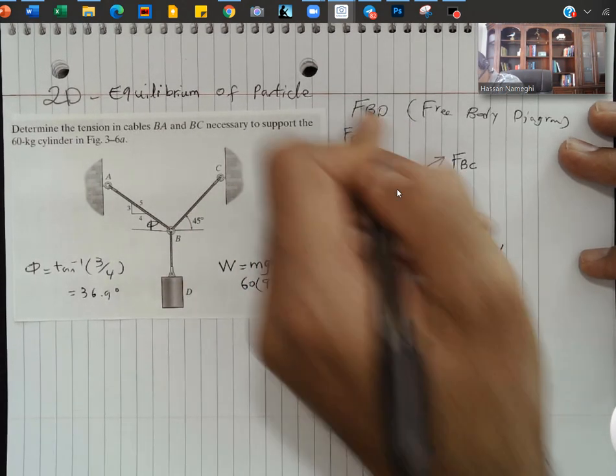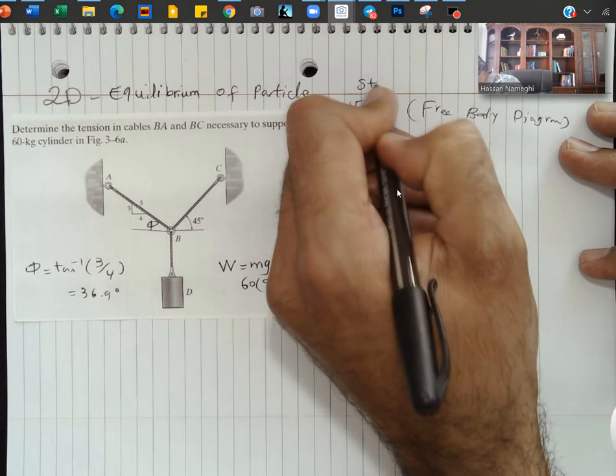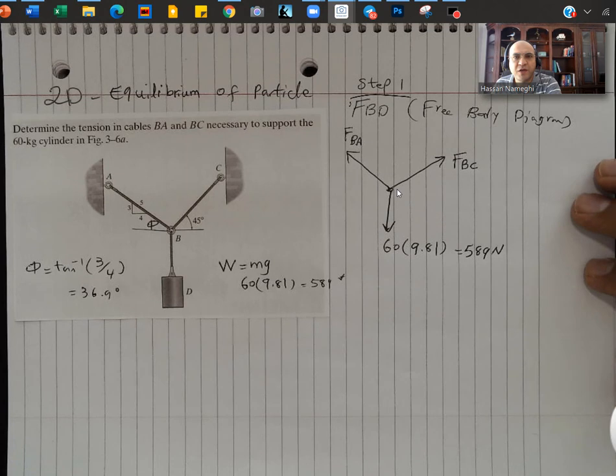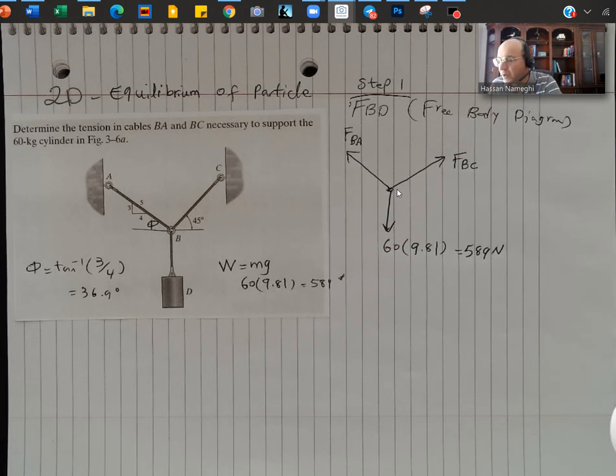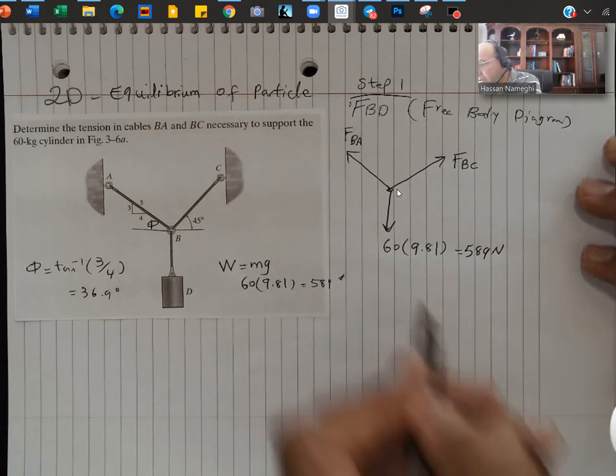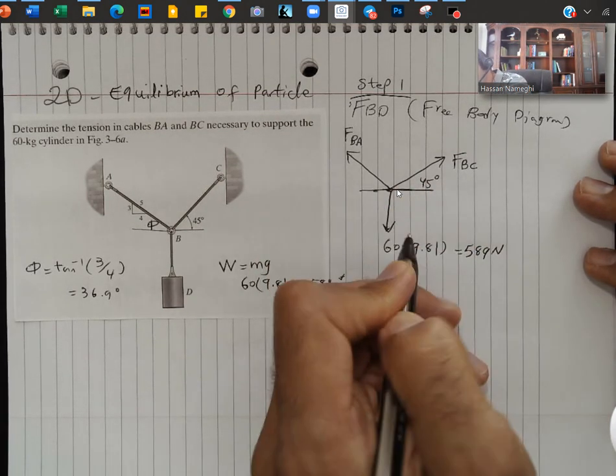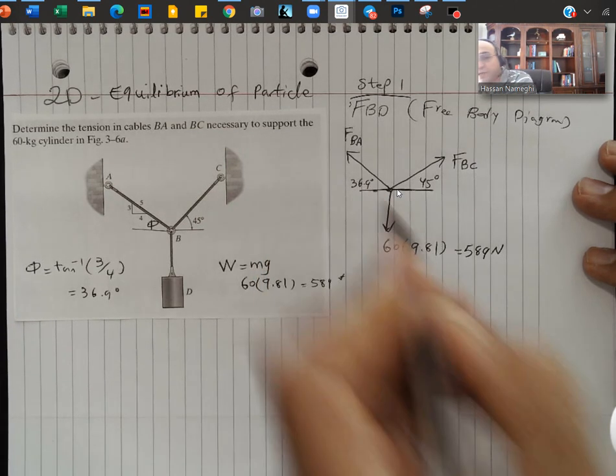Okay, the first step is to draw a free body diagram for it. The free body diagram is a way that we can communicate with each other on the problem. Now the angles, one of them is 45, the other angle is 36.9 degrees.